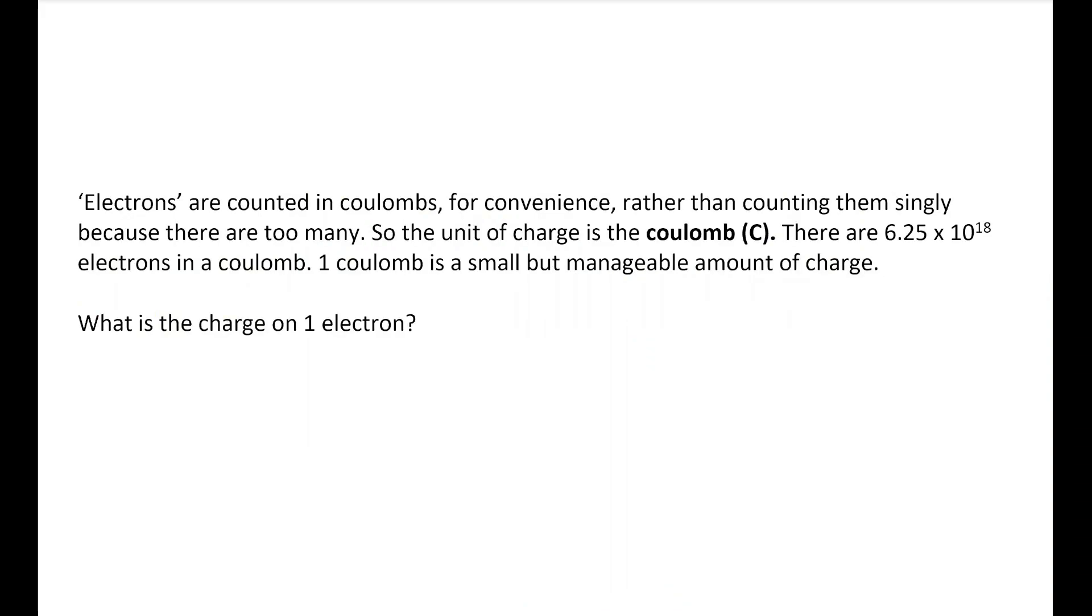When we talk about circuits, and we're talking about the movement of electrons in circuits, we do not count electrons individually. The charge of an electron is way too small to count individually how many electrons might pass at a particular time. So instead, we count them in units called coulombs. And there are this many electrons in a coulomb. A coulomb is a small but manageable amount of charge, and so it becomes easy to count for most practical circuits.